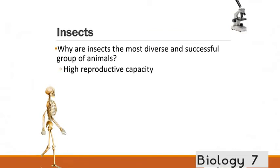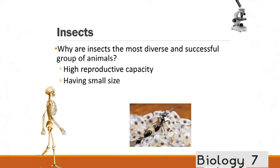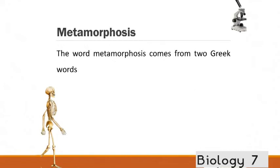So, why are they so diverse and successful? Well, they've got a few characteristics which have helped them out over the years. One, they've got a very high reproductive capacity. So, they're very good at reproducing and reproducing quickly and making lots of offspring. They're small. This helps, too, because they require less resources. They've got a waxy coating over their exoskeleton for protection. And they undergo this process called metamorphosis.